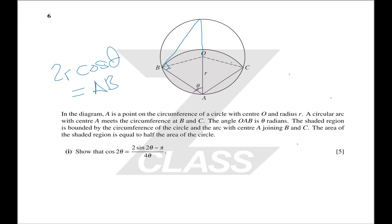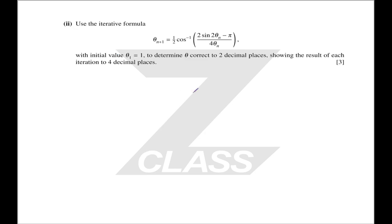It is definitely a tricky question. The second part is much easier: we have an iterative formula and a starting value. Put that into the right-hand side, get an answer out for the next value, and repeat until your required decimal place stops changing. In this case they ask for four decimal places, so you need to show the third decimal place stops changing.